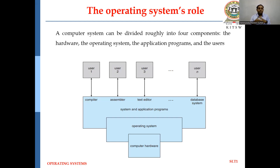You can see the Computer Hardware, and upon Computer Hardware we install the Operating System. Upon the Operating System, you install all the application programs. The application programs may be compilers, assemblers, text editors, music players, video players, and so on.